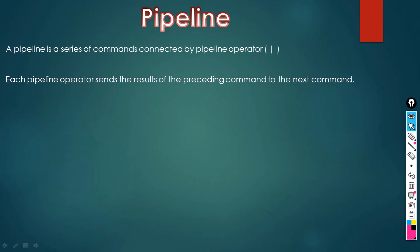Each pipeline operator sends the results of the preceding command to the next command. When I have two commands — Get-Service and Get-Member — these are two different cmdlets. When I use this pipe character, Get-Service runs and gets me all the list of services on my computer, producing an output of that list.